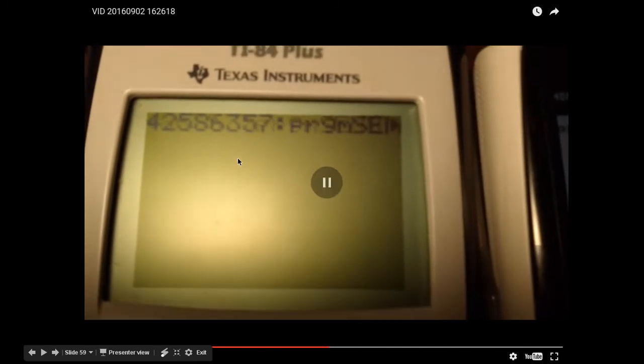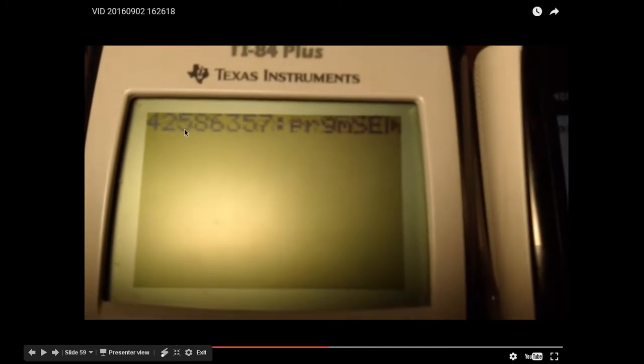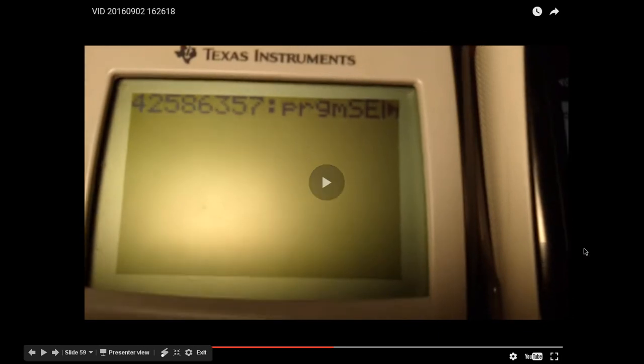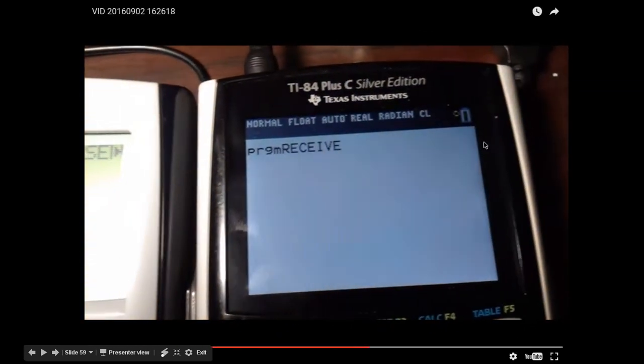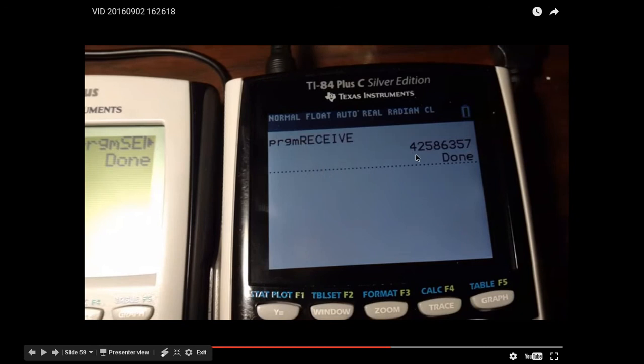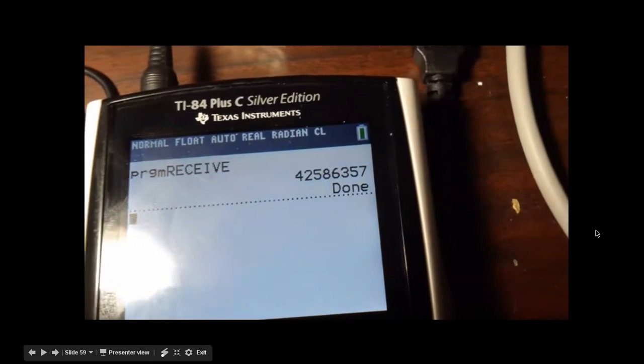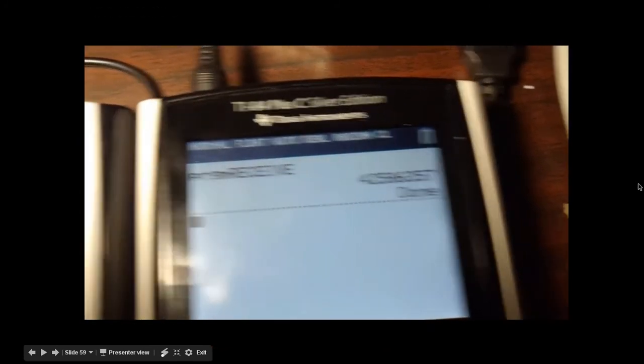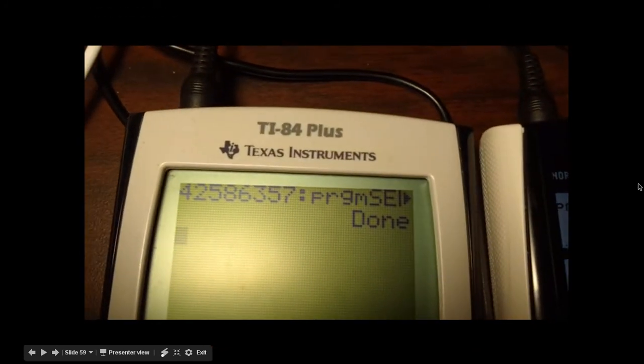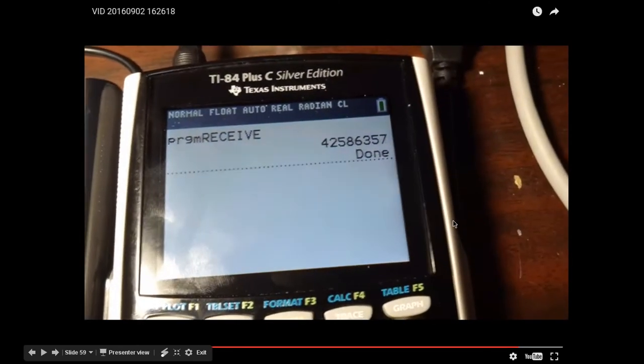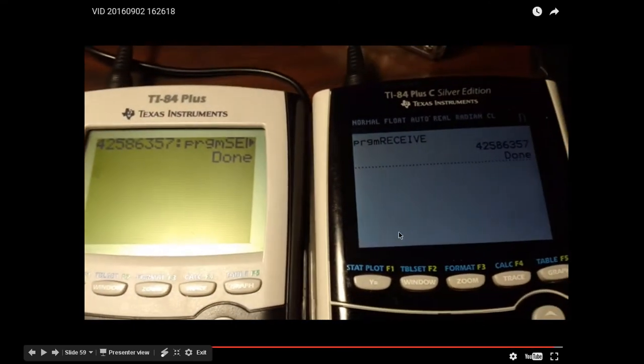So I have to run program receive first, and the calculator's going to start listening. So it's not logging anything yet, but it's going to just be listening. Now on this side, I'm going to press enter and send out this integer, 42586357. Now it just takes about a second, and now on this calculator, you've got 42586357. So it can send the integer pretty quickly, and pretty large integers too. As you can see, same integer on both calculators.